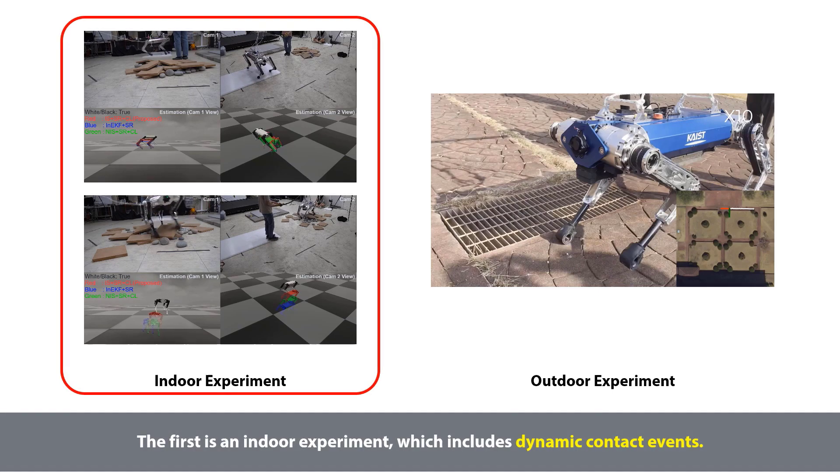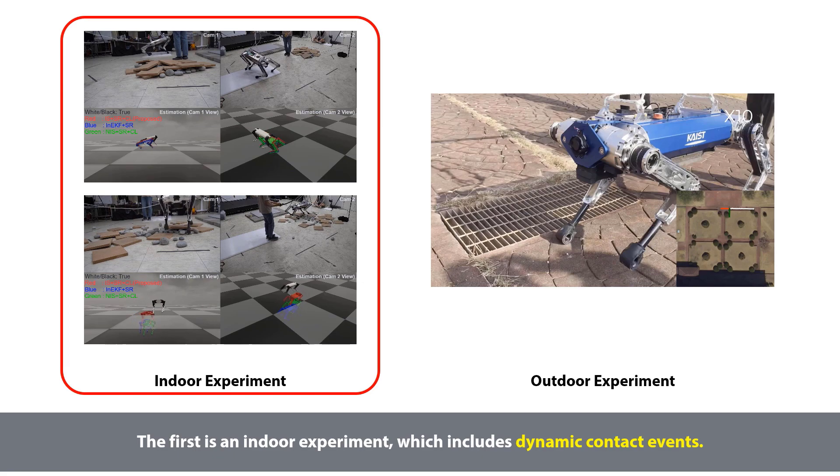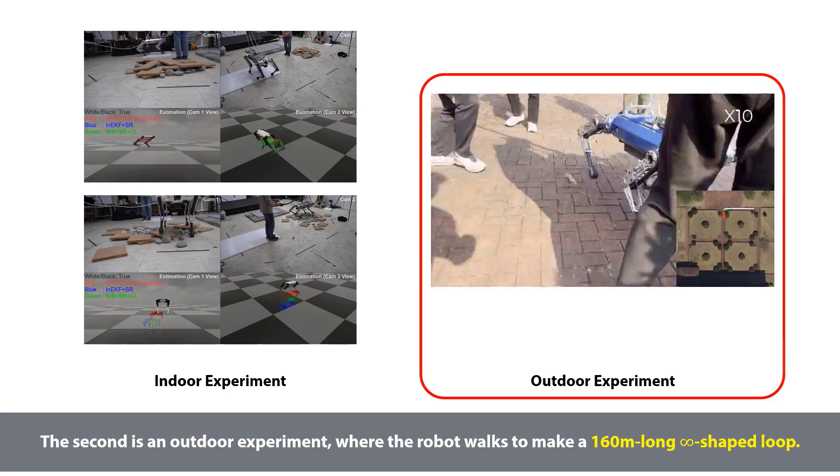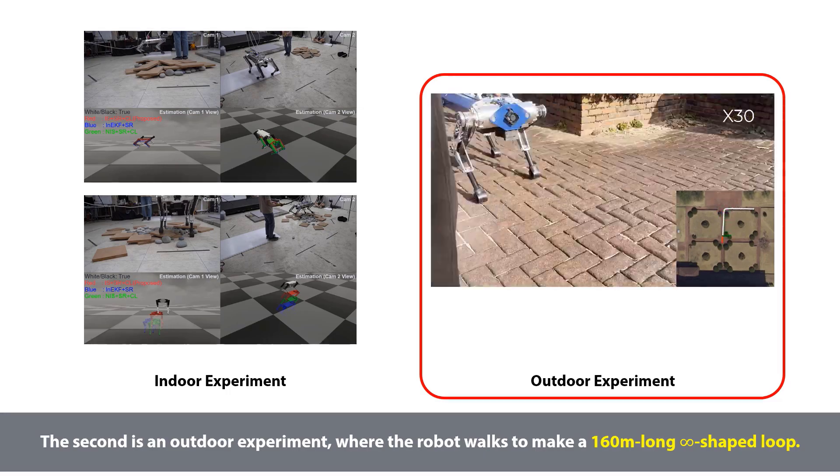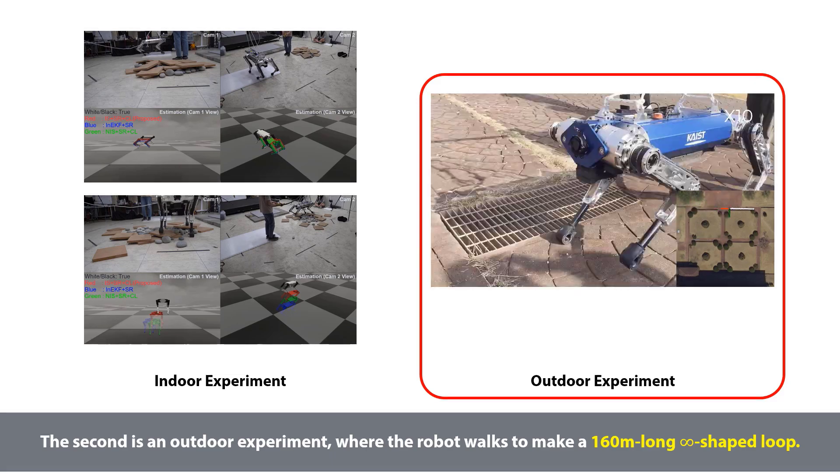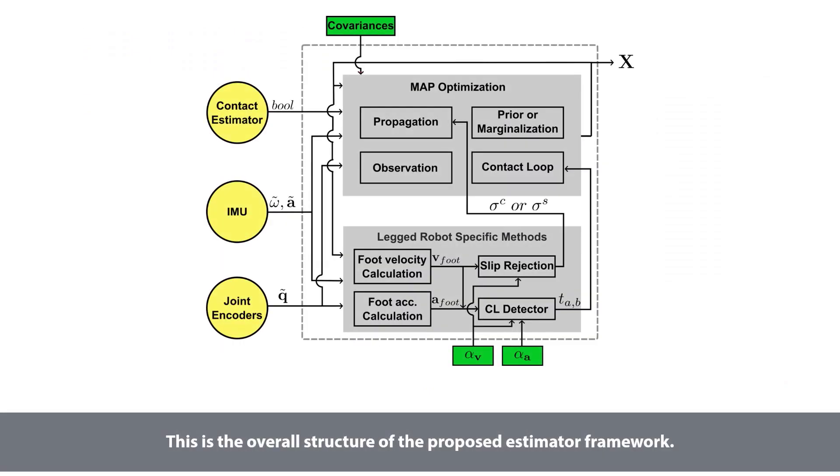The first is an indoor experiment, which includes dynamic contact events. The second is an outdoor experiment, where the robot walks to make a 160 meters long infinity-shaped loop.